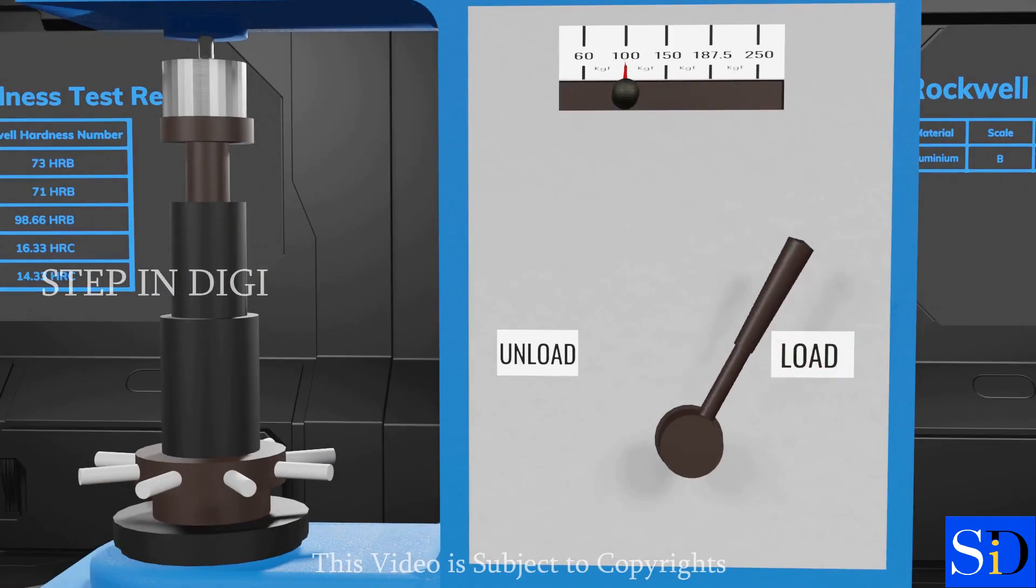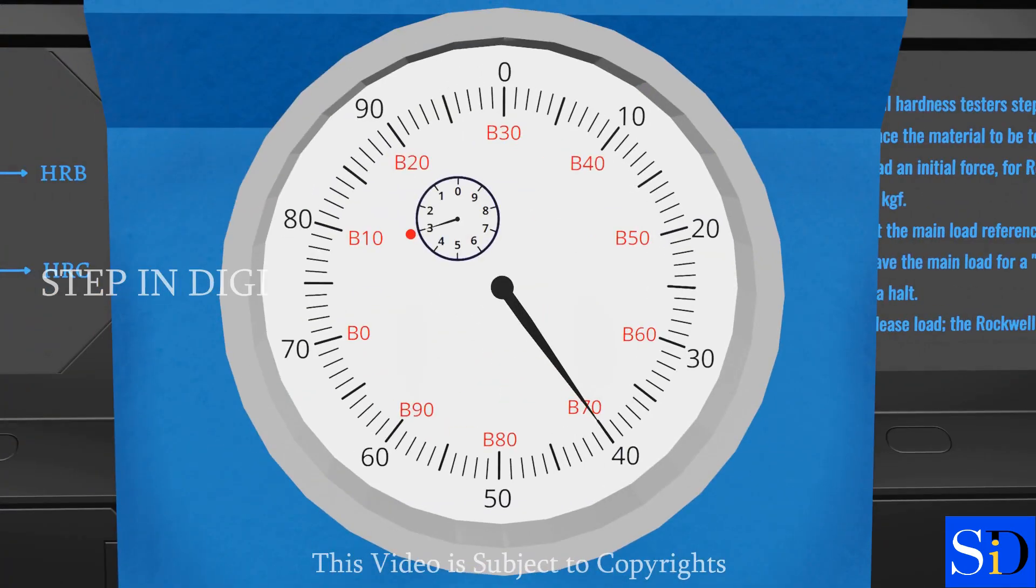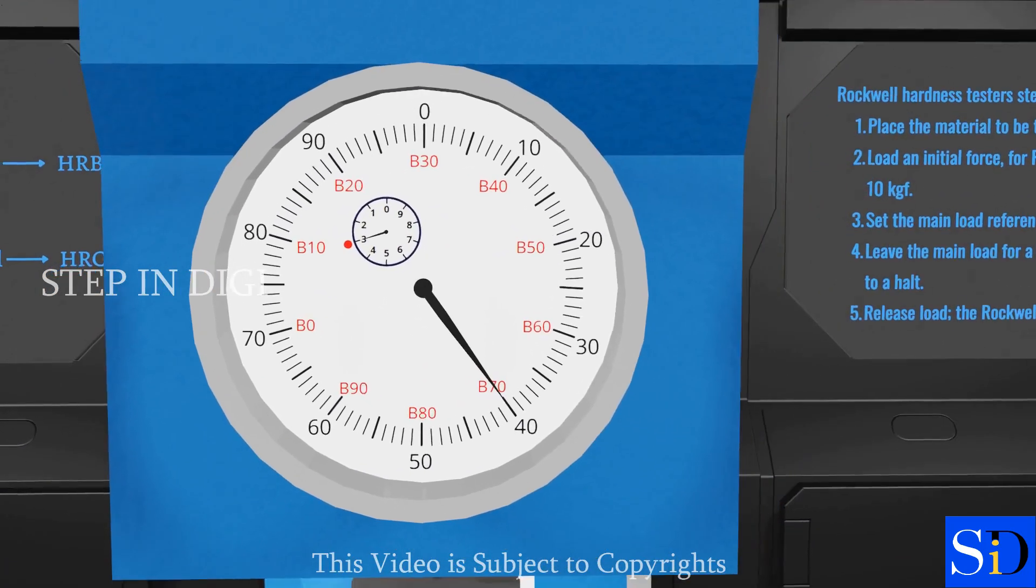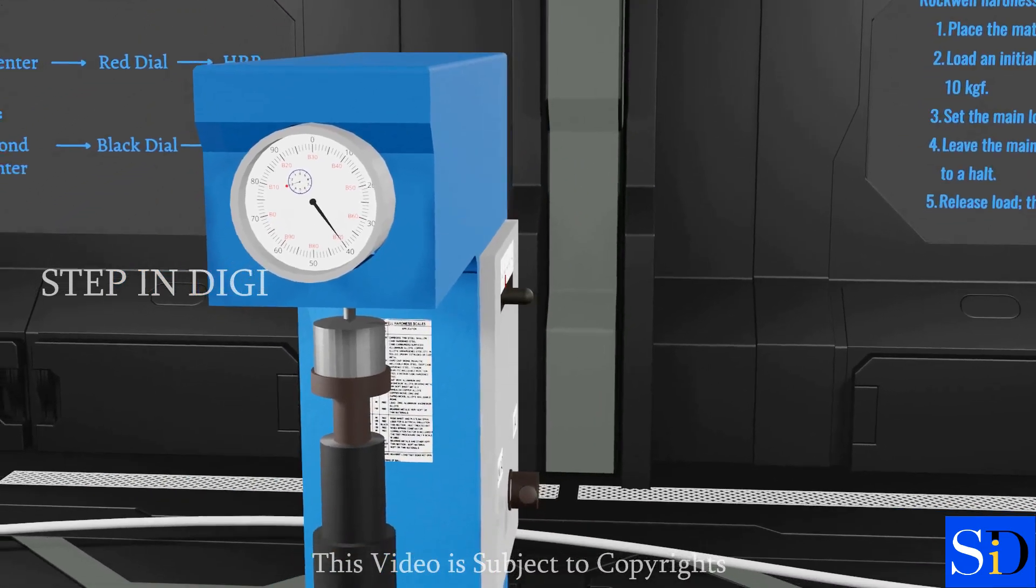Now, pull the lever back to unload position. Look at the dial and note down the reading. Repeat the same process three times for each material, and take down the values.